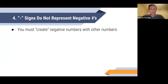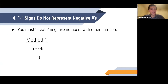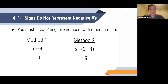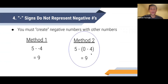Number four: minus signs do not represent negative numbers. This is a common misconception among new players — you have to create negative numbers from other numbers. For example, in regular math you can write five minus negative four equals nine, since the two negatives make a positive giving five plus four equals nine. In equations, method two — five minus (zero minus four) — uses a parenthetical expression to produce a negative number. When you subtract that negative, the two negatives make a positive and you still get nine. This is the same math as method one but with more structure.